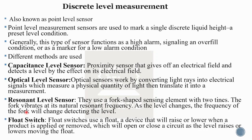A float switch is a point-level sensor. It is a device that will rise or lower when a product is applied or removed. A position change occurs, and the connector opens or closes a circuit as the level rises or lowers, moving the float.